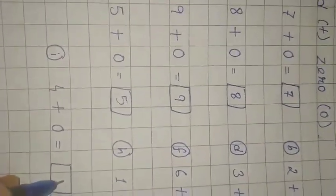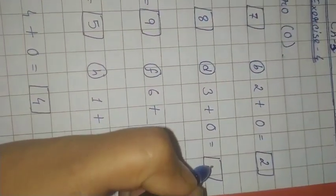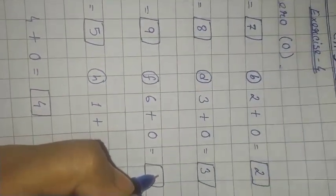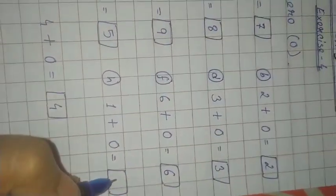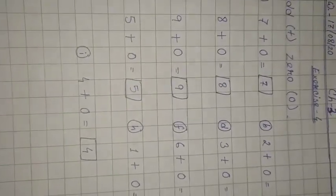4 plus 0 equals 4. 2 plus 0 equals 2. 3 plus 0 equals 3. 6 plus 0 equals 6. And 1 plus 0 equals 1. Right?